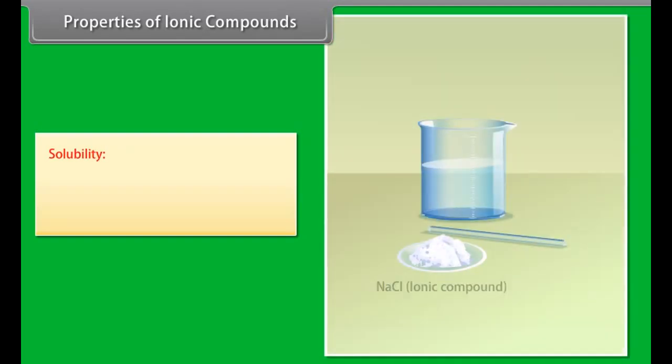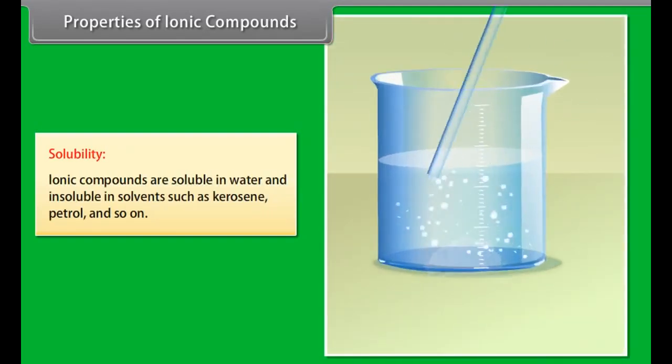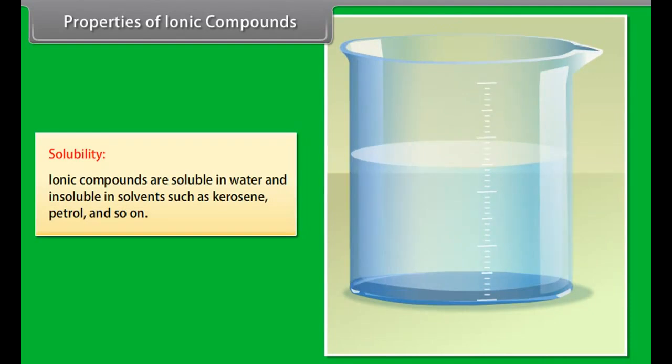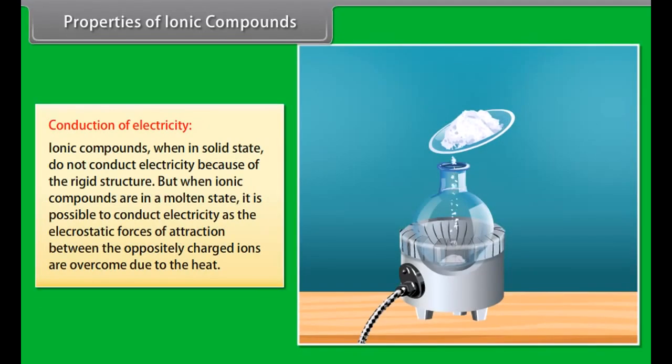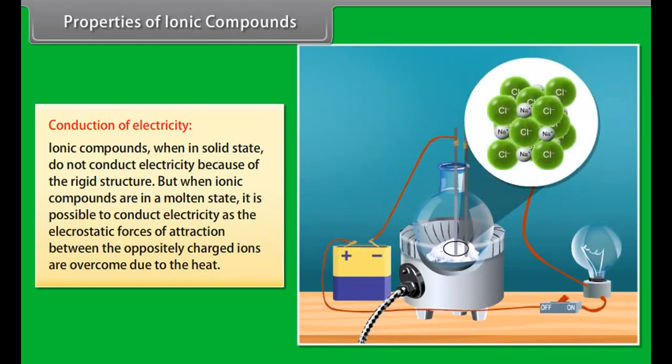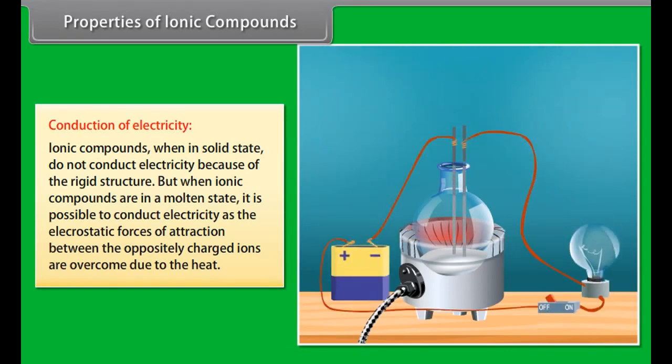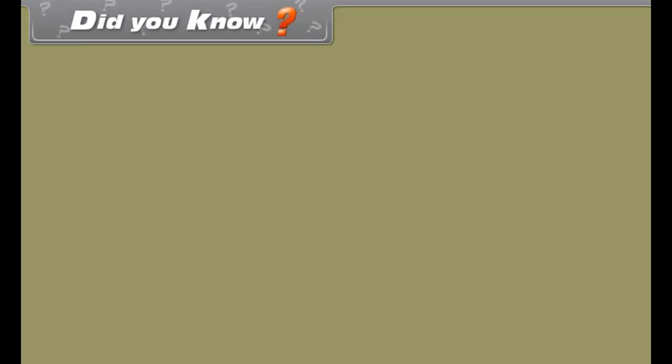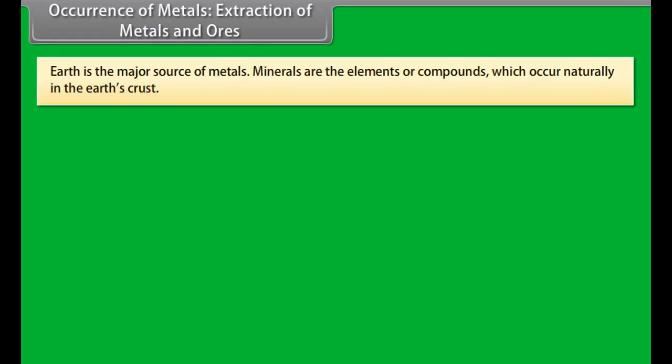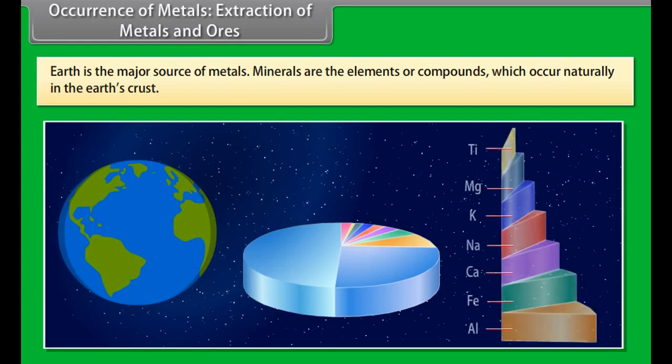Solubility. Ionic compounds are soluble in water and insoluble in solvents such as kerosene, petrol and so on. Conduction of electricity: Ionic compounds, when in solid state, do not conduct electricity as the movement of ions is not possible because of the rigid structure. But when ionic compounds are in a molten state, it is possible to conduct electricity as the electrostatic forces of attraction between the oppositely charged ions are overcome due to the heat. This leads to ions to move freely and conduct electricity.